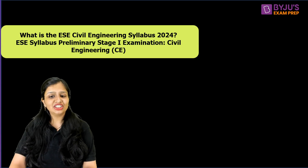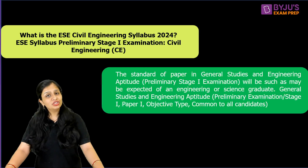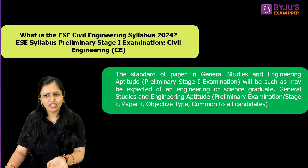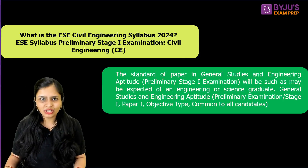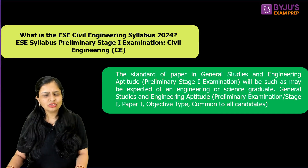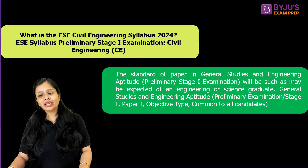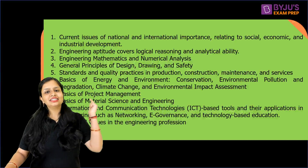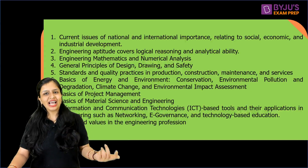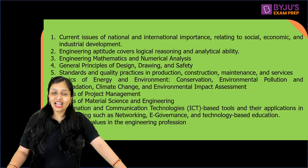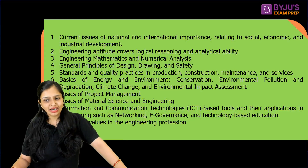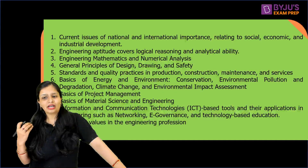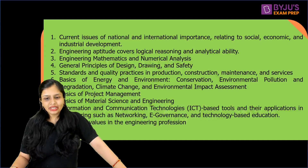When you talk about ESE Civil Engineering syllabus, at the preliminary stage you have an objective paper. It's like any engineering or science graduate paper — you have aptitude, because Paper 1 is General Studies and Engineering Aptitude. The aptitude won't be at CAT level; it will be simple engineering or graduate-level aptitude. In Stage 1 we have two papers: first is your General Studies paper, which will be common to all branches. There are 10 topics: current issues of national and international importance, engineering aptitude including logical reasoning and analytical ability, engineering mathematics, numerical analysis, engineering drawing, ethics, project management, material science, ICT, and standards and quality practices in production.